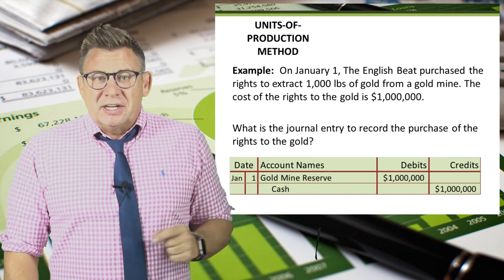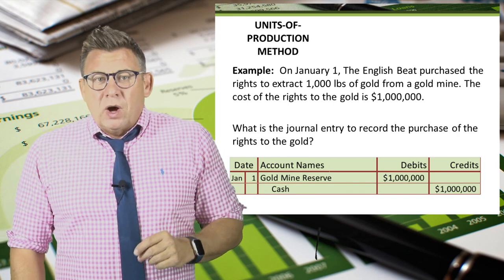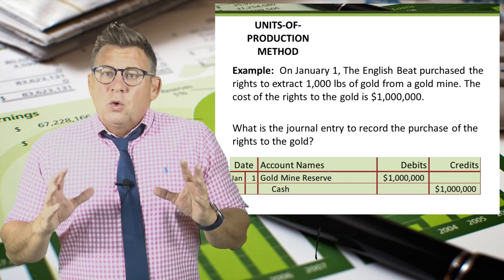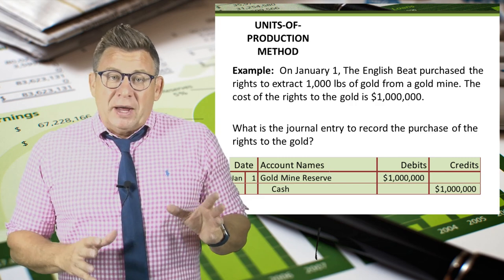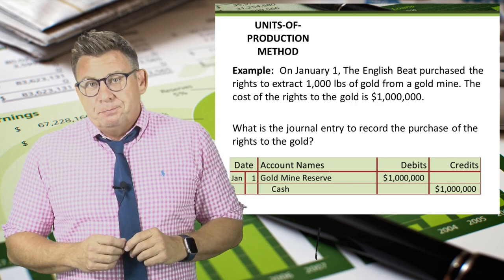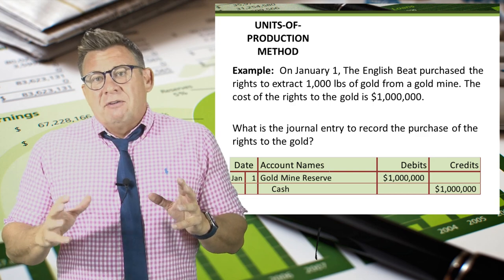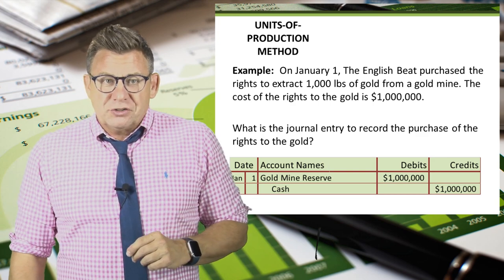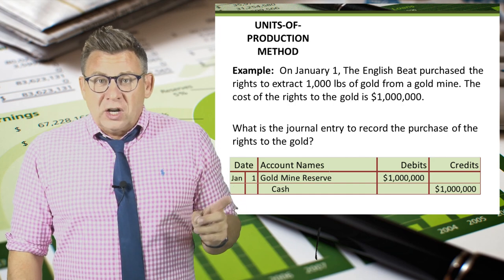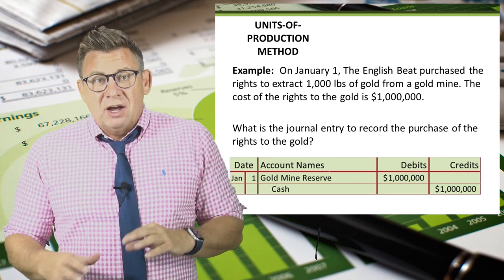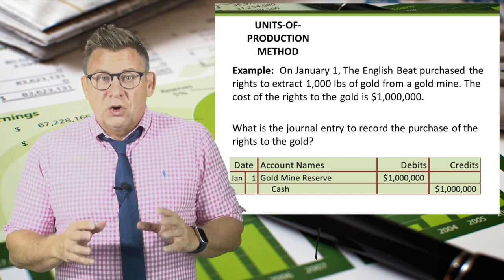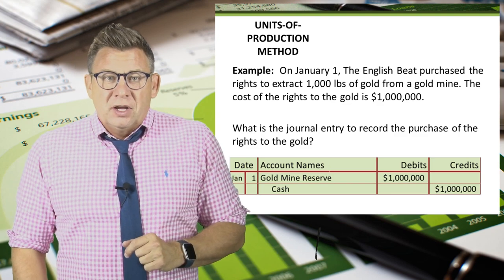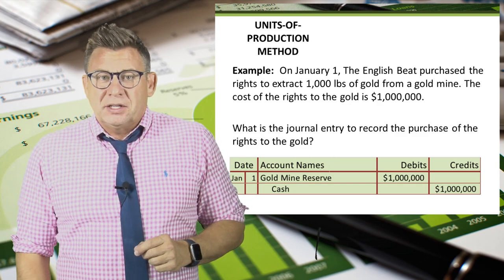Let's look at an example. On January 1, the English Beat purchases the rights to extract 1,000 pounds of gold from a gold mine. The cost of the rights to the gold is $1 million. The journal entry to record the purchase is a debit to gold mine reserve and a credit to cash for $1 million.